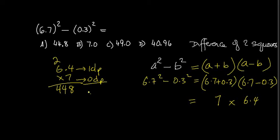So the sum of the decimal places that I should have in my answer is 1 decimal place. Therefore I'm going to move the point one place inwards, and so my answer should be 44.8.